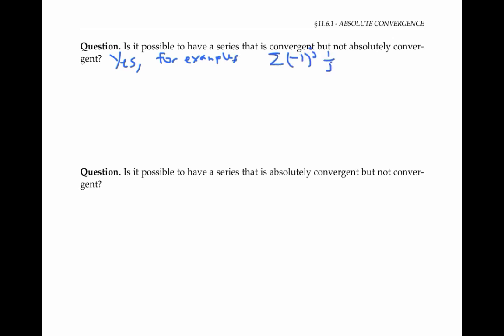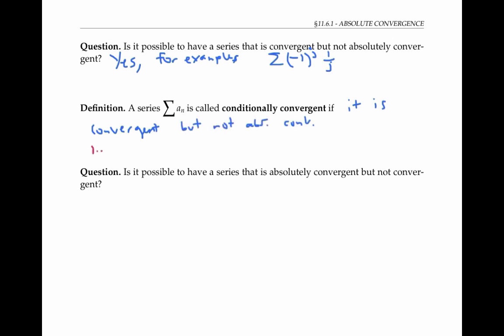There are many other examples of such series, and in fact there's a special name for them — they're called conditionally convergent. A series is called conditionally convergent if it is convergent but not absolutely convergent. In symbols, that is, the sum of a_n converges, but the sum of the absolute values of a_n diverges.